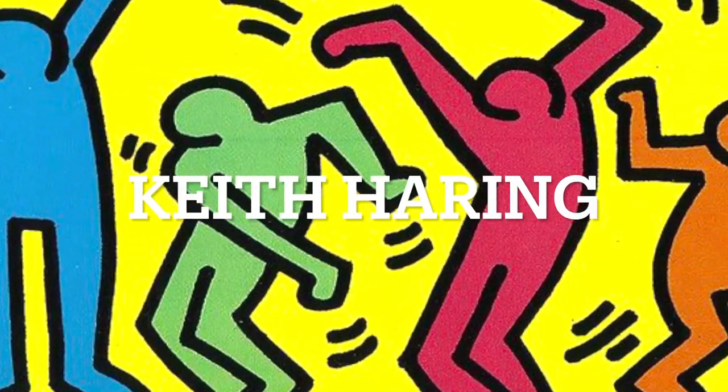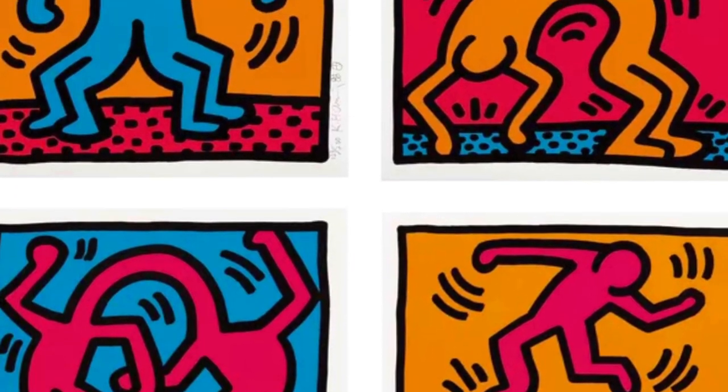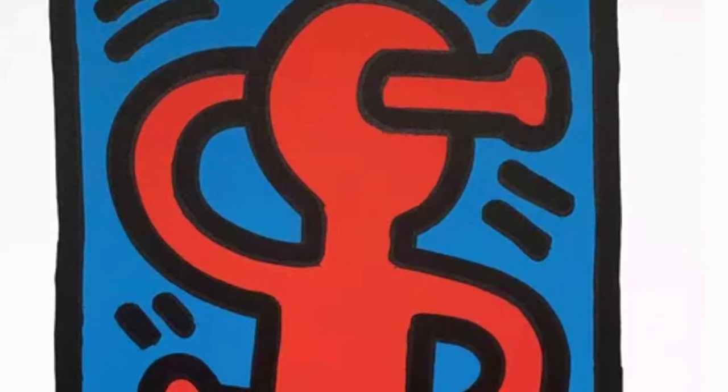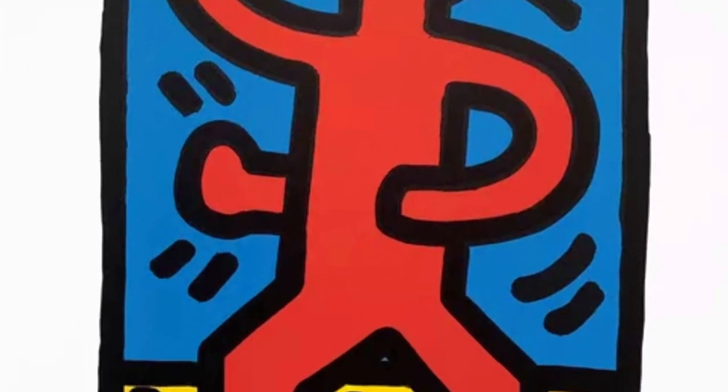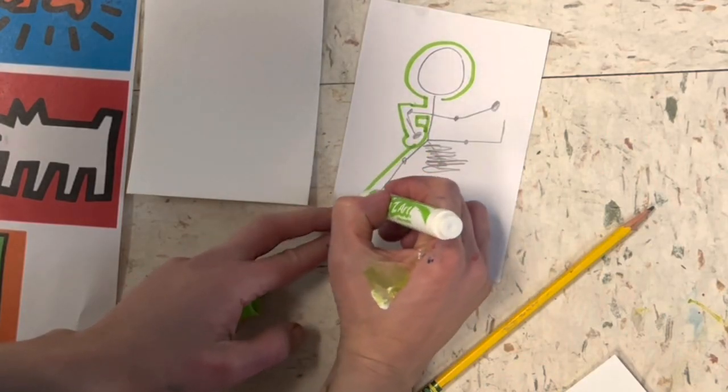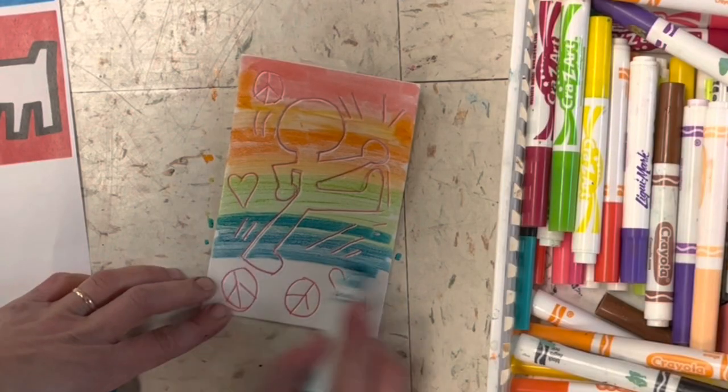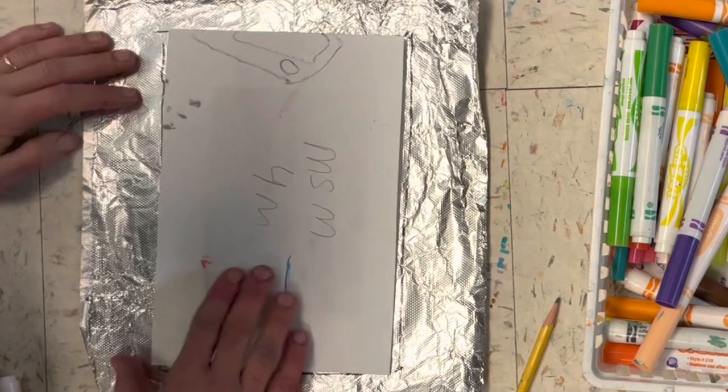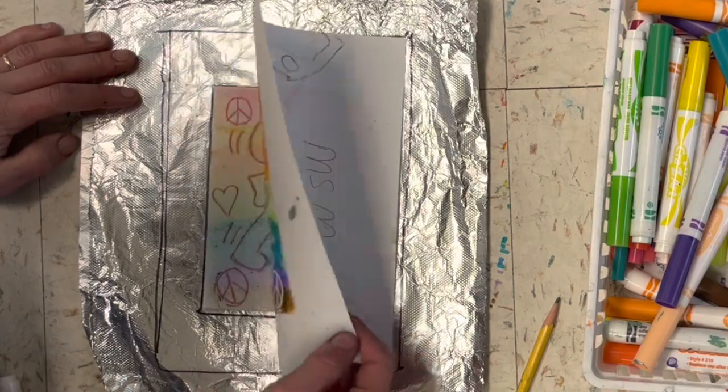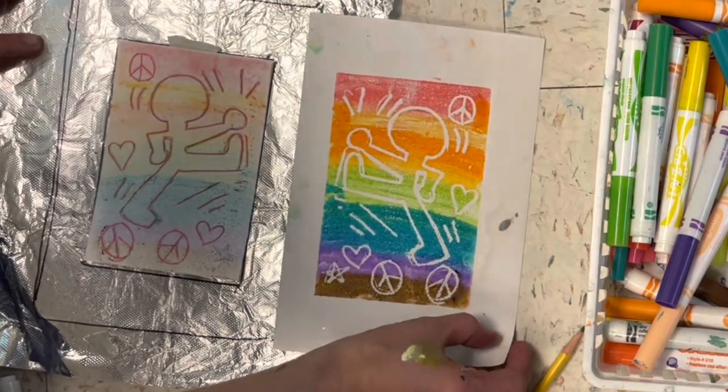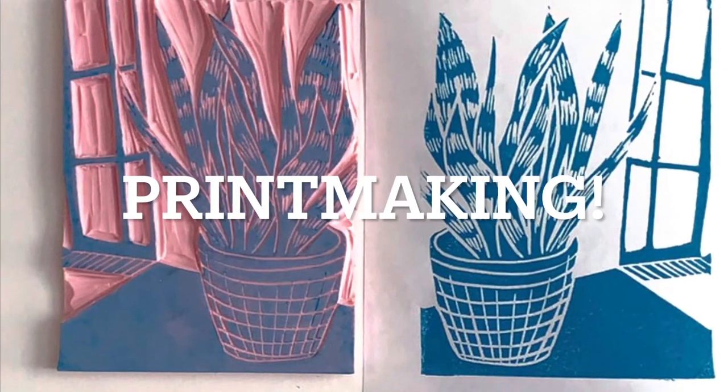The artist Keith Haring loved drawing people dancing and moving and playing ball and celebrating and doing whatever this is. Today we are going to be drawing, tracing our drawing onto a styrofoam printing plate, coloring it, printing it onto paper and basically making a stamp of a person in action. This process is called printmaking.